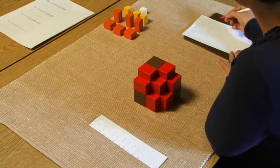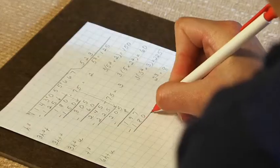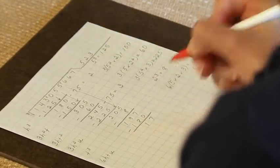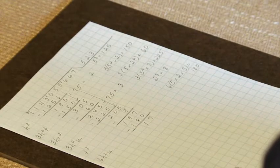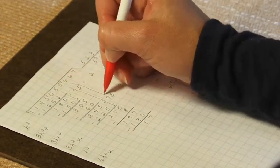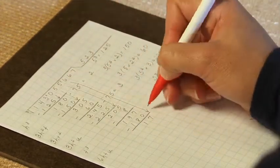So we are subtracting 180 from 197, and that leaves us with 17. We'll be bringing down another digit.